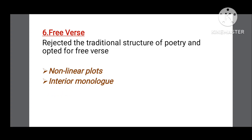The sixth characteristic is the use of free verse. Modern writers rejected the traditional structure of poetry and opted for free verse; as a result, modern poetry lacks a consistent rhyming scheme, metrical pattern, or musical form. Moreover, non-linear plots were introduced in dramas and novels, which showed the fragmented nature of society. The technique of interior monologue was also introduced in modern literature.